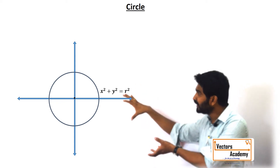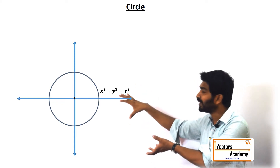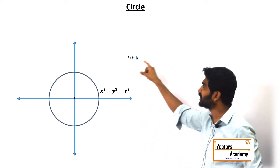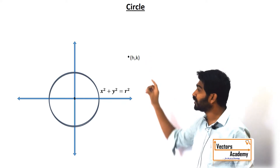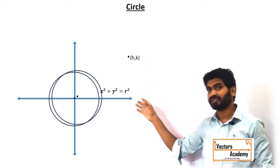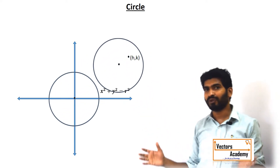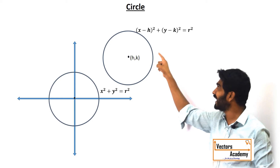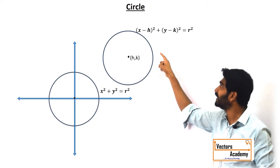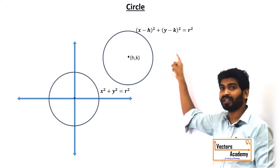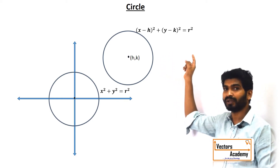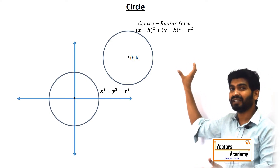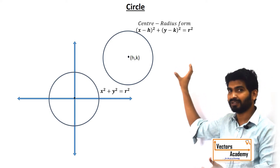Now if the circle is moved to some other point, say (h, k), the equation of the circle changes using the shift of origin method and the equation becomes (x - h)² + (y - k)² = r². This form is called the center-radius form of the circle.